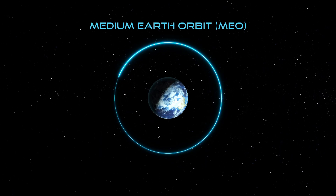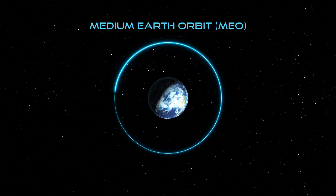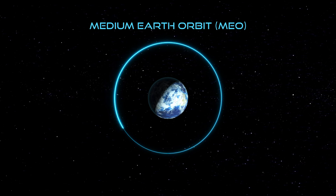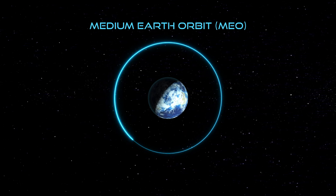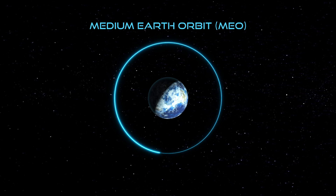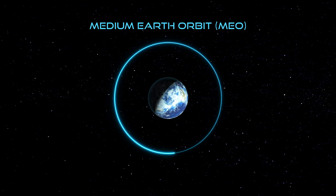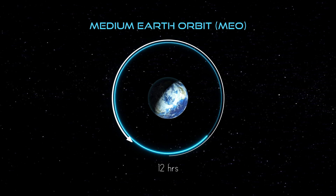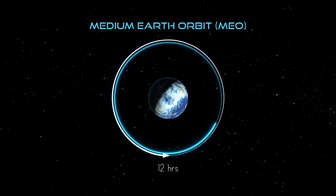Located between LEO and GEO is MEO, which has a range of orbital altitudes from just outside LEO to just inside GEO, with corresponding orbital velocities and periods. However, most applications in MEO are semi-synchronous orbits, meaning the orbital period is roughly 12 hours. This again proves Kepler's third law: lower is faster and less energy; higher is slower and more energy.